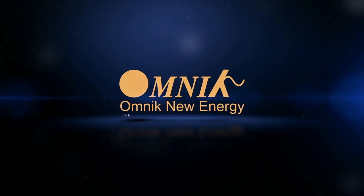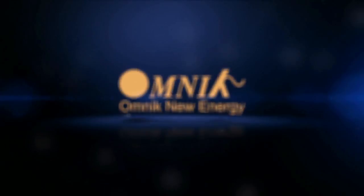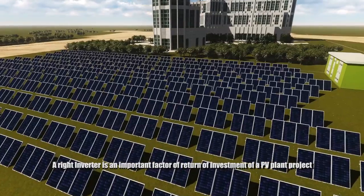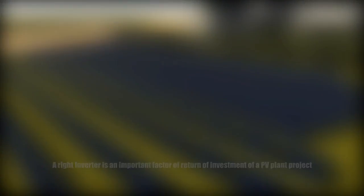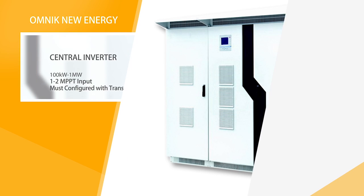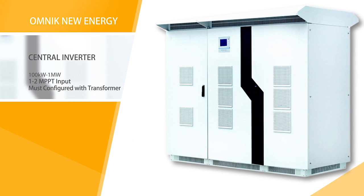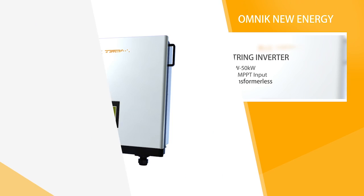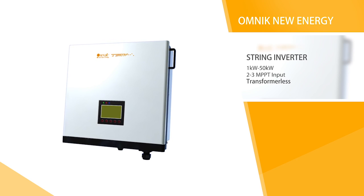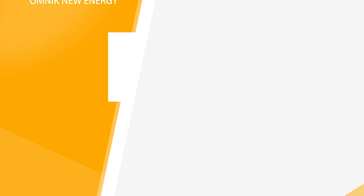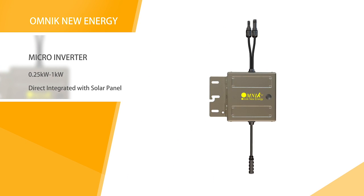Omnic lets mankind share and enjoy blue sky and white clouds. A right inverter is an important factor of return on investment of a PV plant project. In general, inverters can be divided into central, string, and micro inverters. Central inverters range from 100 kilowatts to 1 megawatt with one or two MPPTs, and a transformer is necessary. String inverters range from one to fifty kilowatts, are transformer-less, and have one, two, or three MPPTs. Micro inverters can be directly integrated with solar panels.